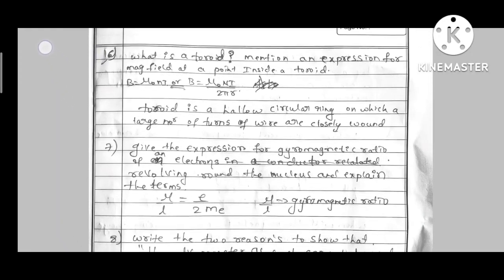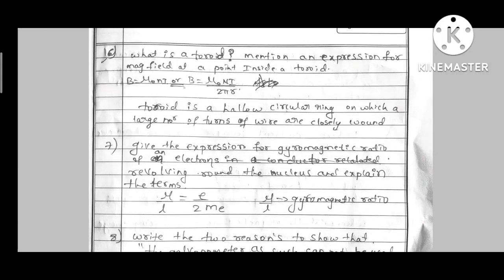Next, coming to the next question. What is toroid, mention an expression for magnetic field at a point inside a toroid? Simple, B is equal to mu0 n I, or B is equal to mu0 capital N I divided by 2 pi R. Here small n is turn density, capital N is total number of turns. Don't get confused. Small n is capital N divided by L.